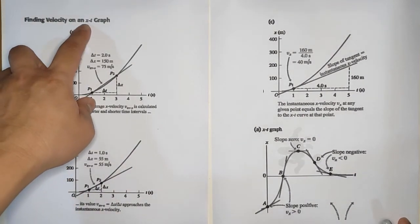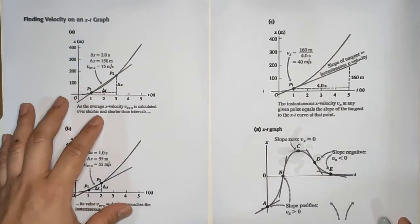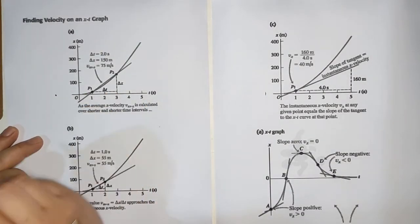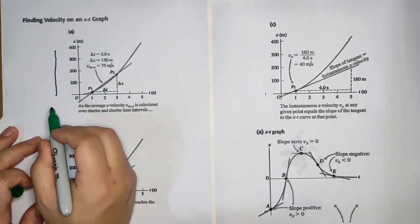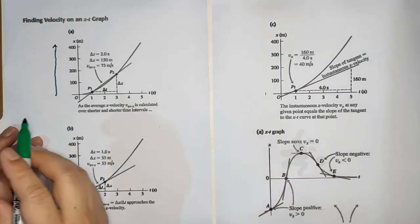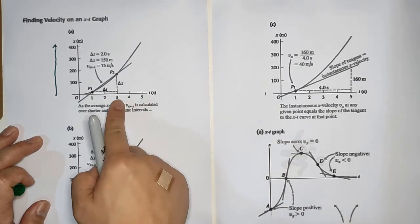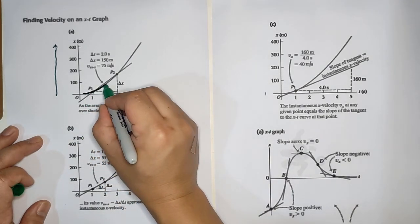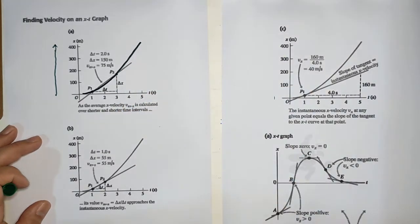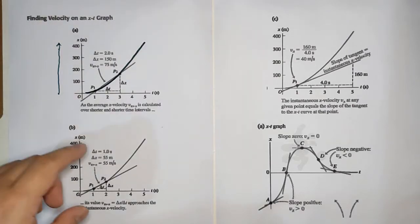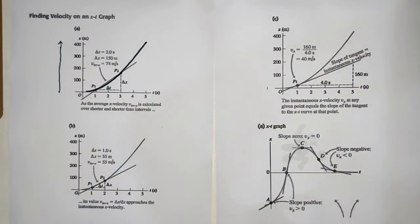Finding velocity on an X-T graph. We are still on a straight line, meaning the particle or car moves in a straight line — it doesn't go left or right, just straight. The graph tells you where the location is with respect to time. Don't be mistaken: this graph is not the path of the car, it's just a graph.